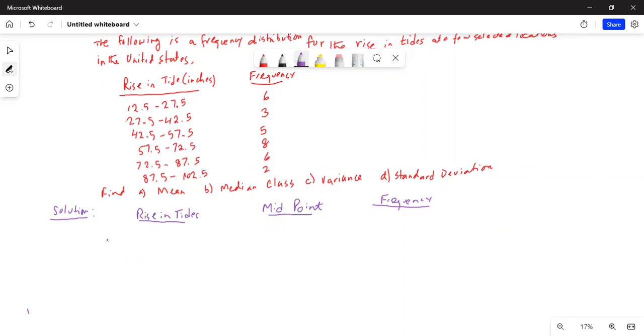The first class is from 12.5 to 27.5. The midpoint of this class will be 12.5 plus 27.5 divided by 2. 12.5 plus 27.5 is equal to 40, divided by 2. Answer is 20, the midpoint of the first class. The corresponding frequency is 6.